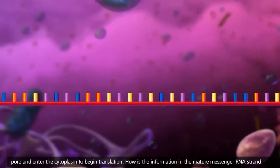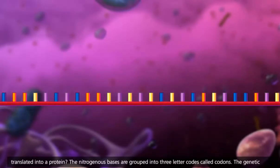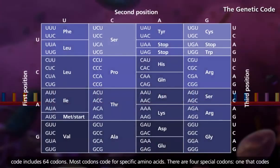How is the information in the mature messenger RNA strand translated into a protein? The nitrogenous bases are grouped into three-letter codes called codons. The genetic code includes 64 codons. Most codons code for specific amino acids.